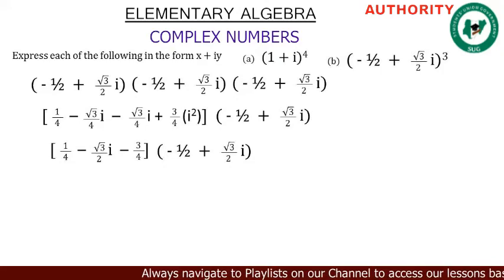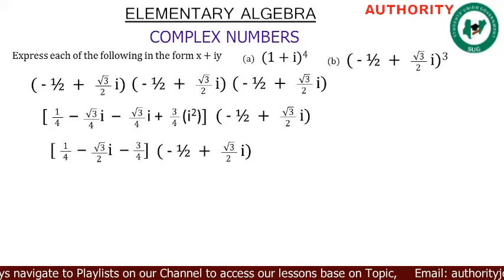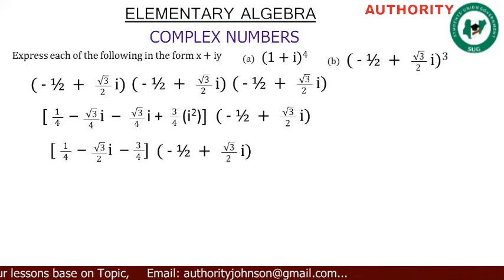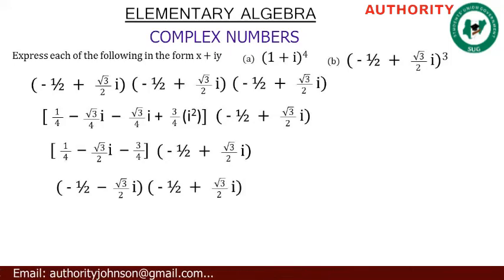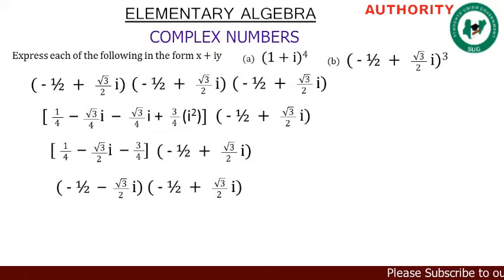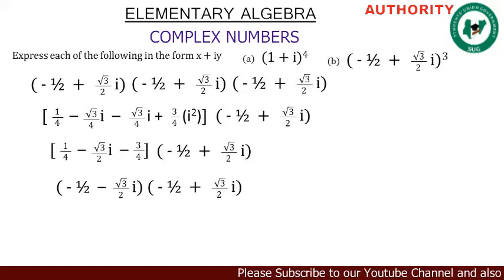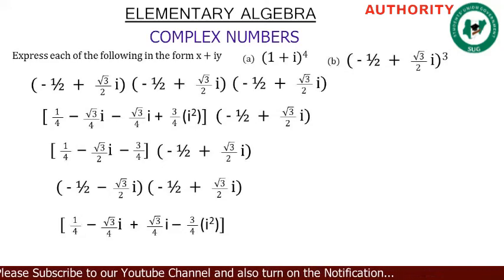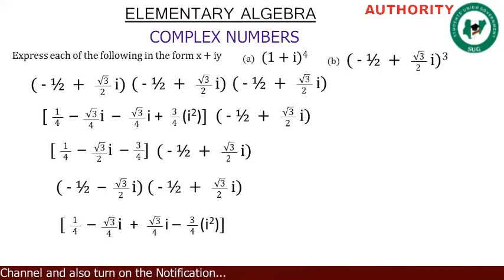Now let's multiply these two brackets. We have: (−1/2)(−1/2) = 1/4. Then (−1/2)(√3/2 · i) = −(√3/4)i. Then (−√3/2 · i)(−1/2) = +(√3/4)i. Then (−√3/2 · i)(√3/2 · i) = −(3/4)i squared.